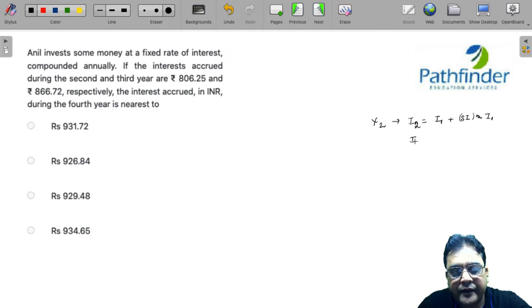If I look at year 3, interest earned in year 3 must be equal to interest earned in year 2 plus SI on interest earned in year 2.